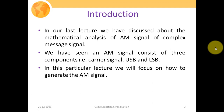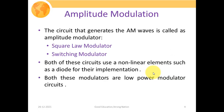An AM signal consists of three components: your carrier signal, upper sideband, as well as your lower sideband. These are the three constituents of your traditional AM signal. In this lecture, we're going to focus on how we actually generate the traditional AM signal. There are basically two methods. The circuit that generates the AM wave is called the amplitude modulator, and the two different AM modulators available are your square law modulator and your switching modulator.